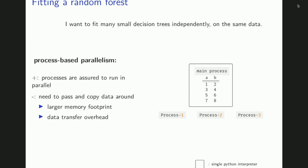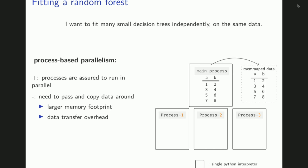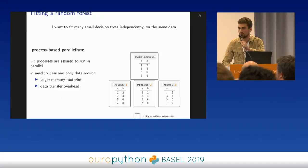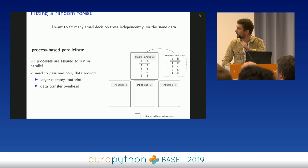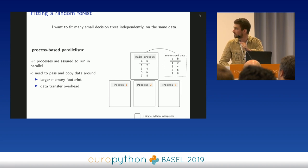With process-based parallelism, different Python processes have different memory spaces. Because they're completely independent, if you have multiple cores you can ensure different sequences of Python bytecode actually run in parallel — giving you a speedup if your code is CPU-bound. The downside is you have to copy data to all the memory spaces of different processes, which increases memory footprint and adds data transfer overhead — especially if data is very large. Shared memory is also a thing, and it's becoming more prominent in Python 3.8.